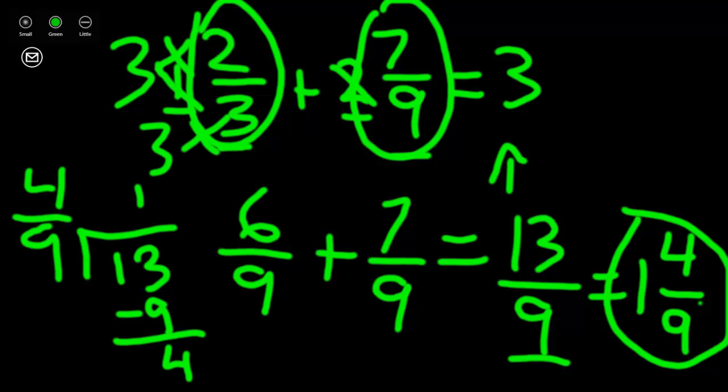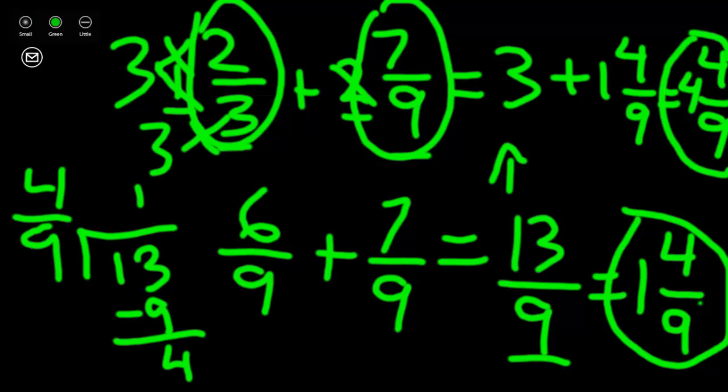So now we'll add our 3 to 1 and 4 ninths which will equal 4 and 4 ninths. This is our answer.